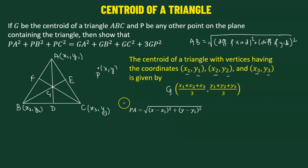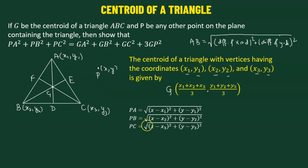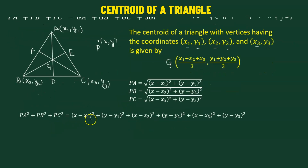Next, we'll also find PB and PC similarly. Then we take the square of each — PA, PB, and PC — and add them together to get: (x − x1)² + (y − y1)² + (x − x2)² + (y − y2)² plus the remaining term for PC.